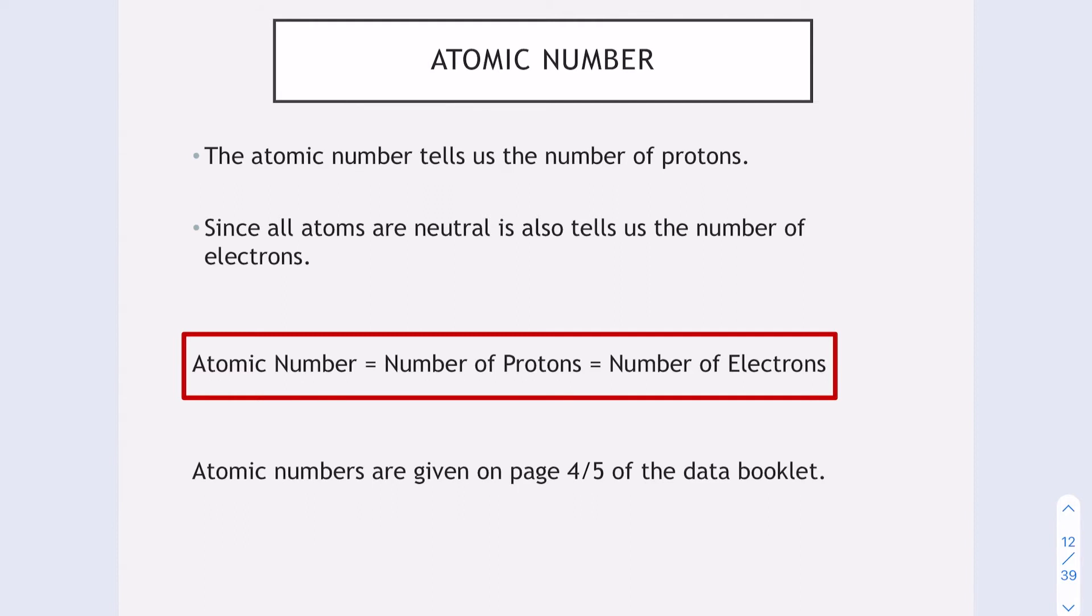The first one is called the atomic number. The atomic number tells us the number of protons. Since all atoms are neutral, it also tells us the number of electrons. So the atomic number is the same as the number of protons, which also can sometimes be the number of electrons. Where do you find this number? It's given on page 4 or 5 of the data book.